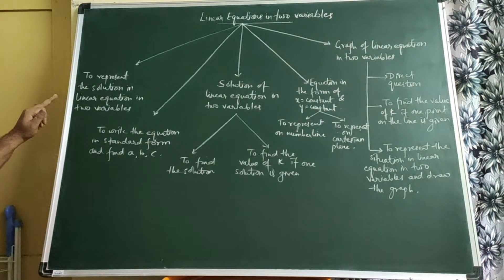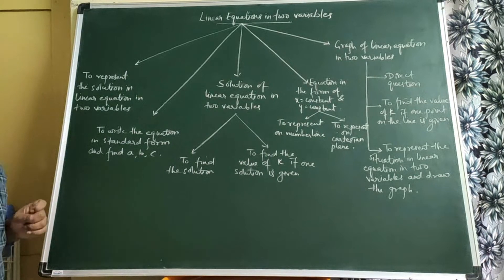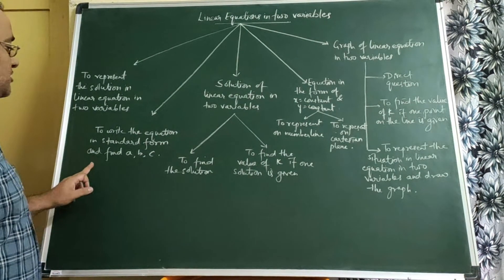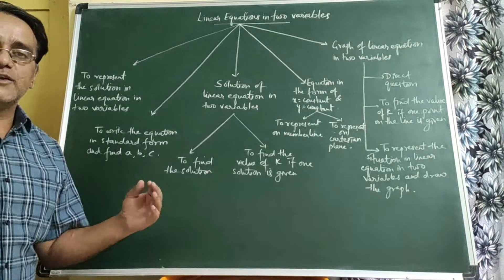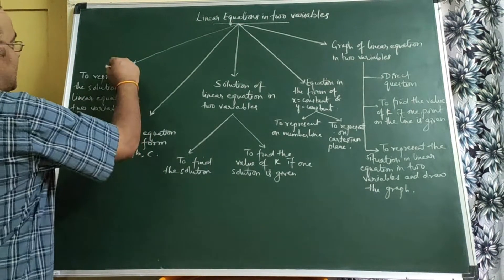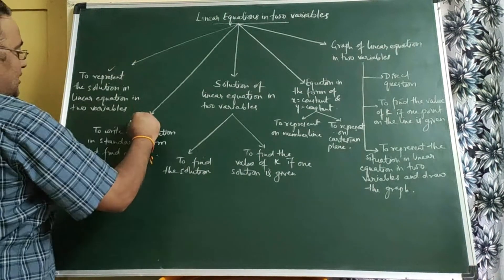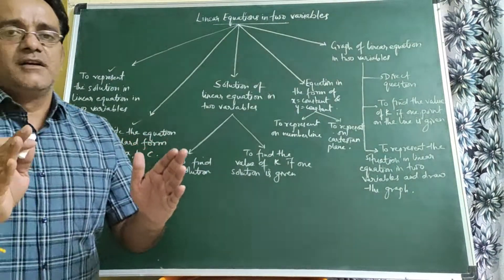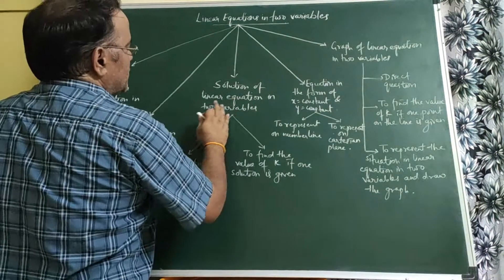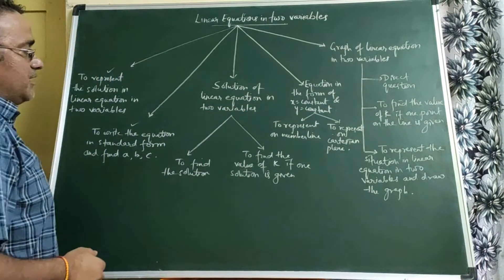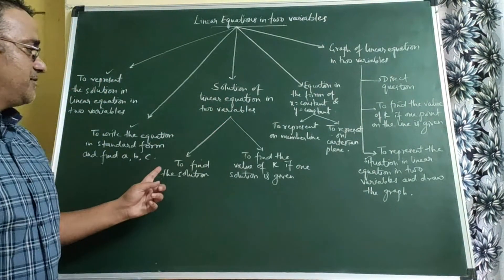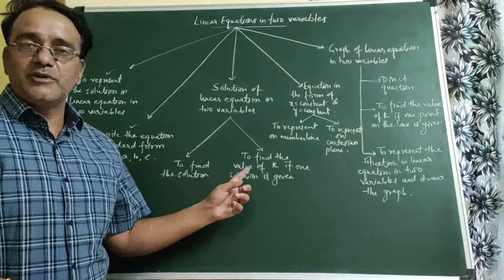The first type is to represent the solution of a linear equation in two variables. The second type is to write the equation in standard form and to find the values of A, B and C. These two types of questions we have already completed in exercise 4.1. Now the second part is solution of linear equations in two variables, and we have two types of questions there.